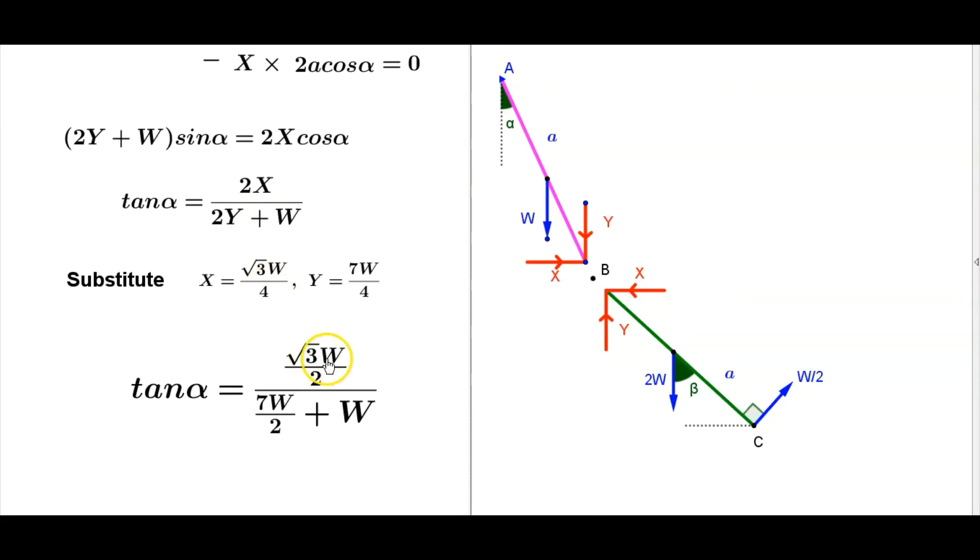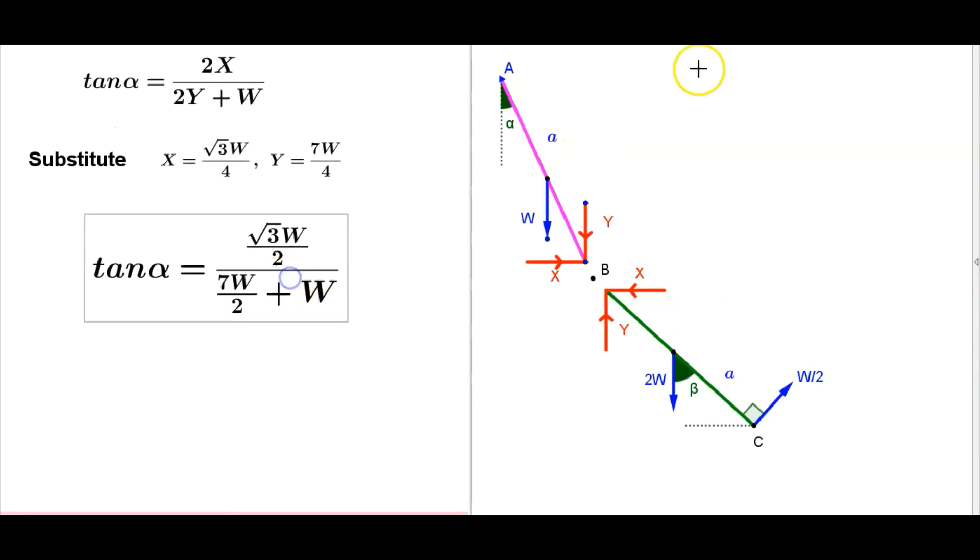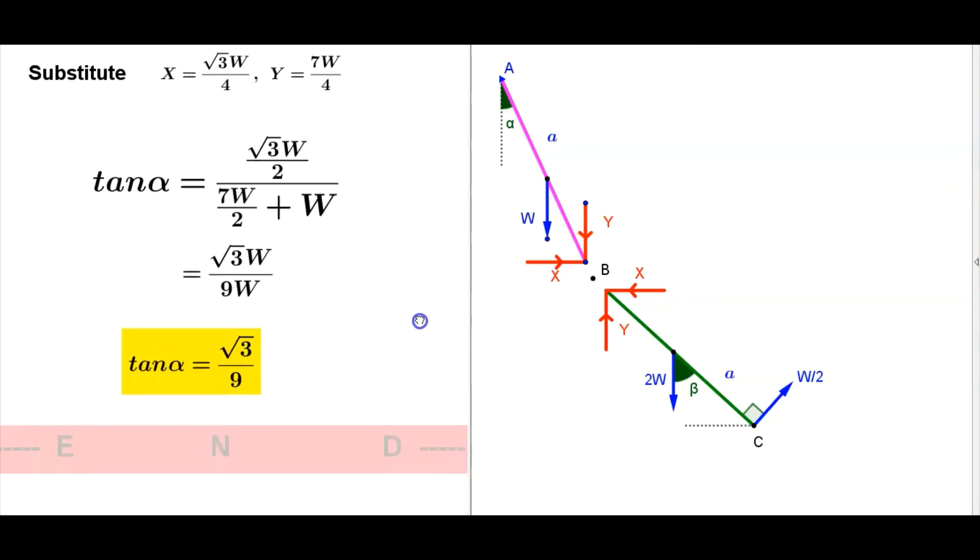So root 3W by 2 divided by 2Y. Y equals 7W by 4, therefore 2Y equals 7W by 2 plus W, 9W. Simplifying further, root 3W over 2W plus 7W, 9W. W, W cancel, therefore tan alpha equals root 3 over 9.